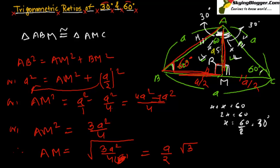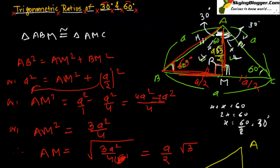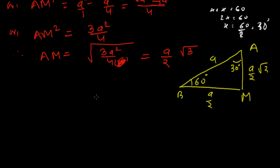So now we have all the values in this triangle: the hypotenuse AB = a, the base BM = a/2, and the height AM = (√3 · a)/2. The angle at B is 60° and the angle at A (half) is 30°. Now we are going to find all the trigonometric ratios.